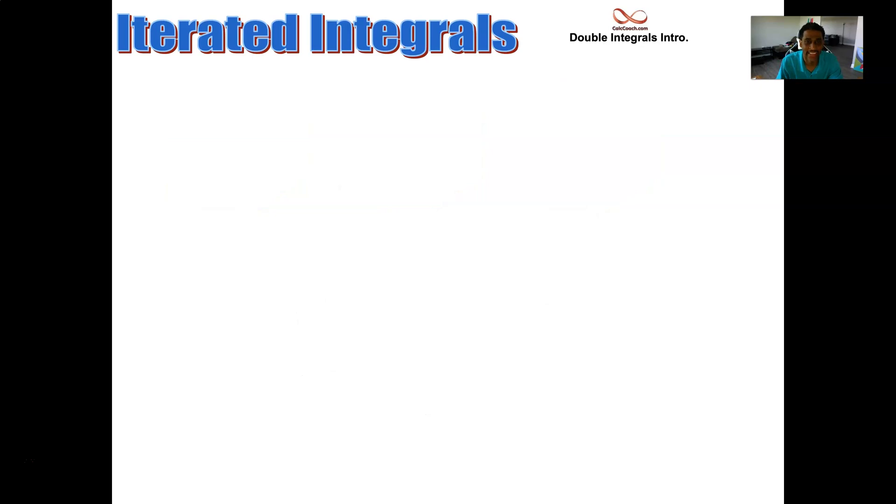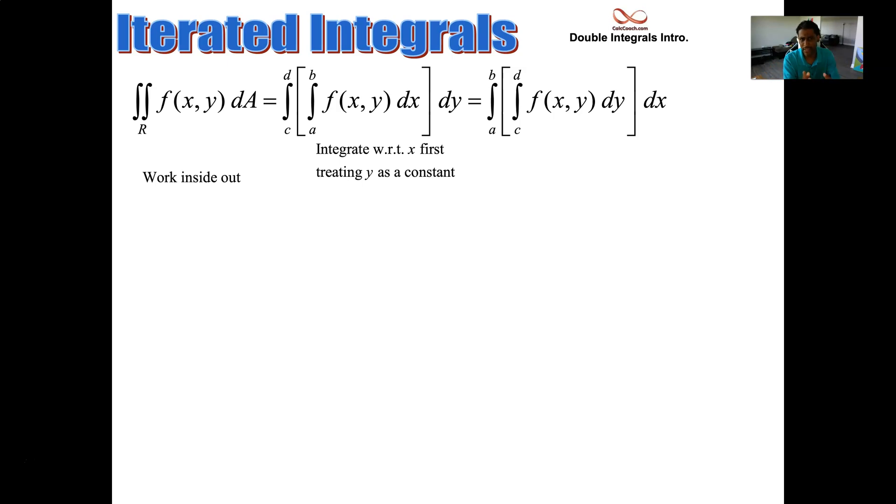It's called an iterated integral. So you're working your way inside out. You're going to start with the inside, and you're going to work your way then to an outside integral. You're going to be integrating with respect to x first. What do you do? Well, what did you do when you're taking the derivative with respect to x? You held the other variable constant.